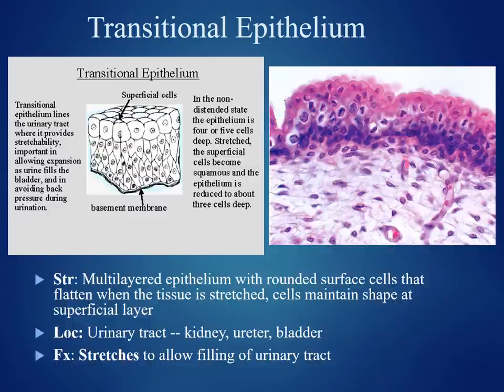Our next tissue is transitional epithelium. The structure is a multilayered epithelium with rounded surface or apical cells that flatten when the tissue becomes stretched. This allows the cells to maintain shape at those apical or superficial layers. The location is the urinary tract, also the kidney, the ureter, and the bladder. The function is to stretch and allow the filling of the bladder, ureter, and urinary tract.